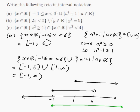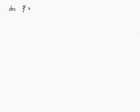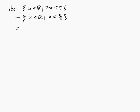Let's do B. The set of x in R such that 2x is less than 5 — we can rearrange this inequality to get x is less than 5/2. That's easy to write as an interval: it's everything less than 5/2, so from minus infinity up to 5/2, not including 5/2, because it's strictly less than. That gives (-∞, 5/2).